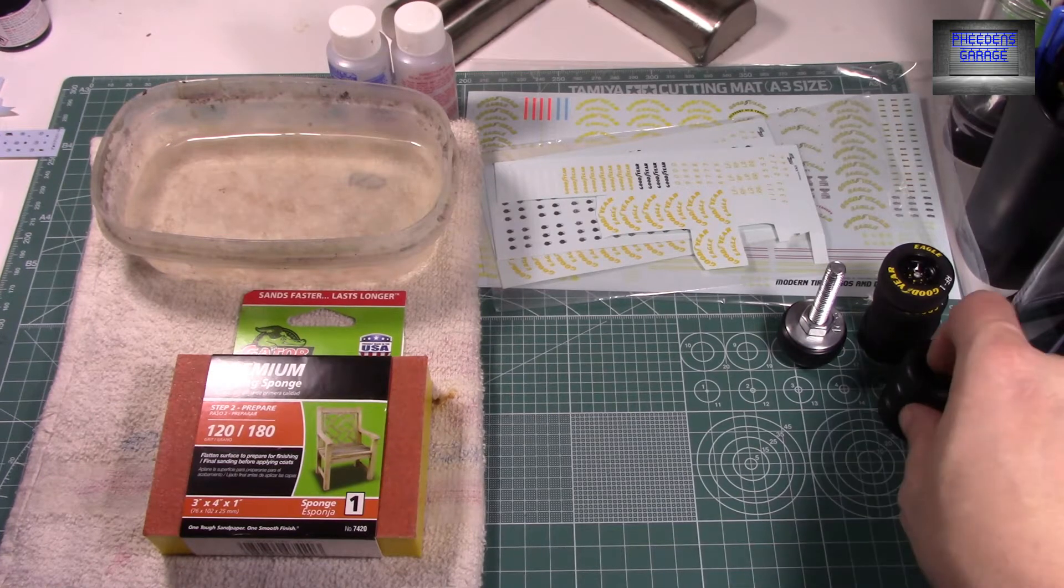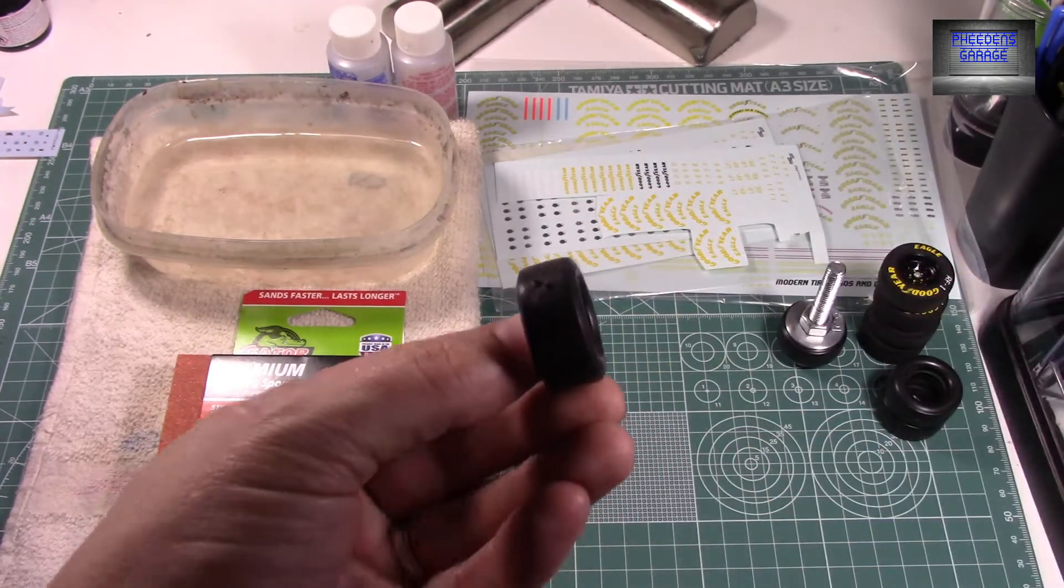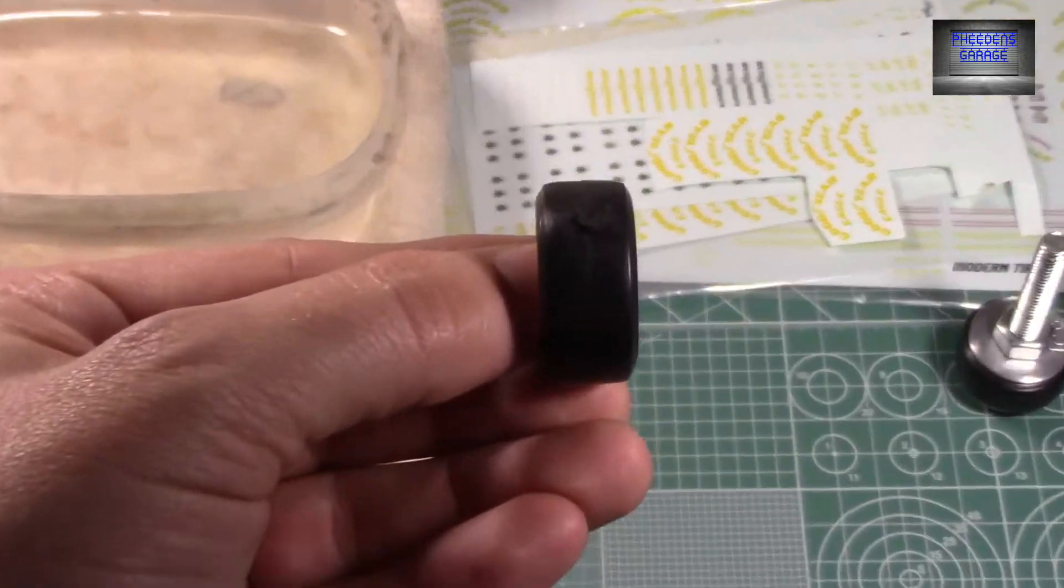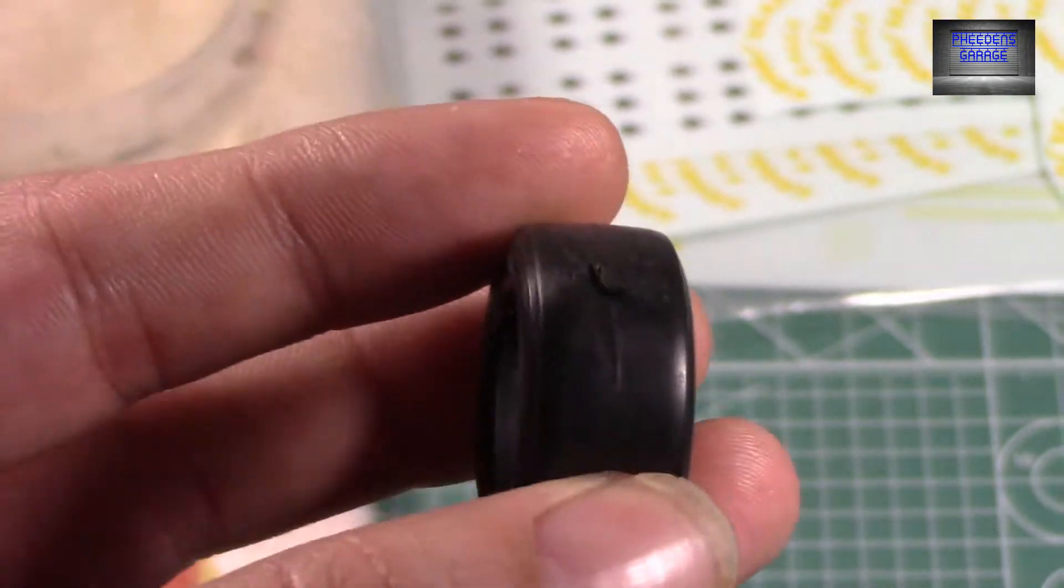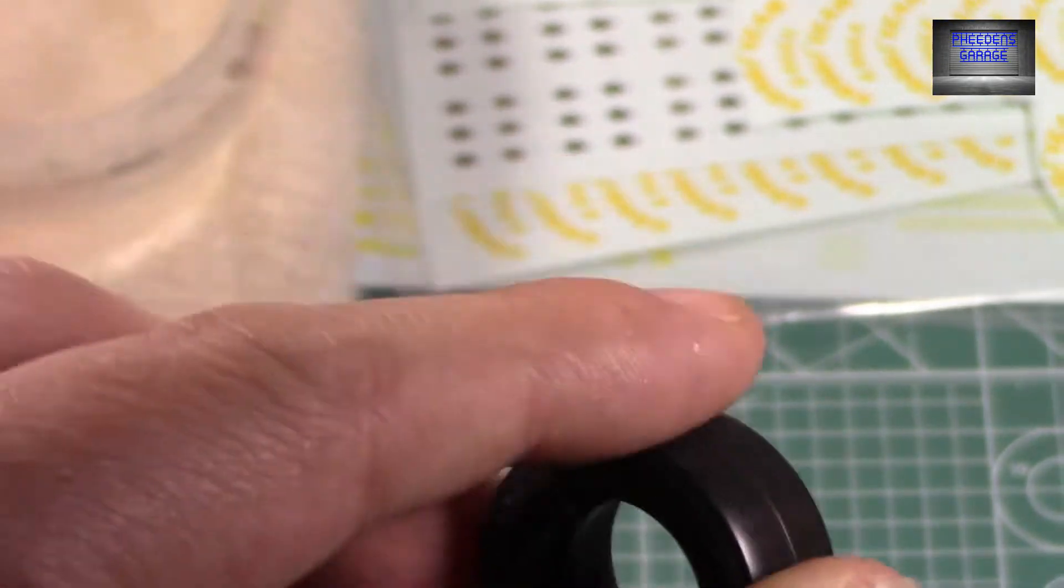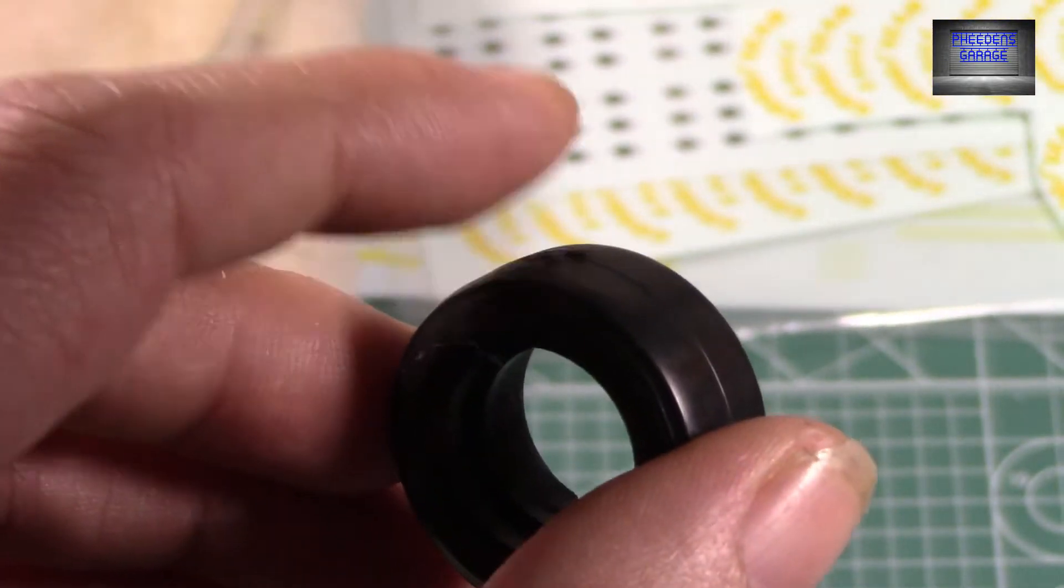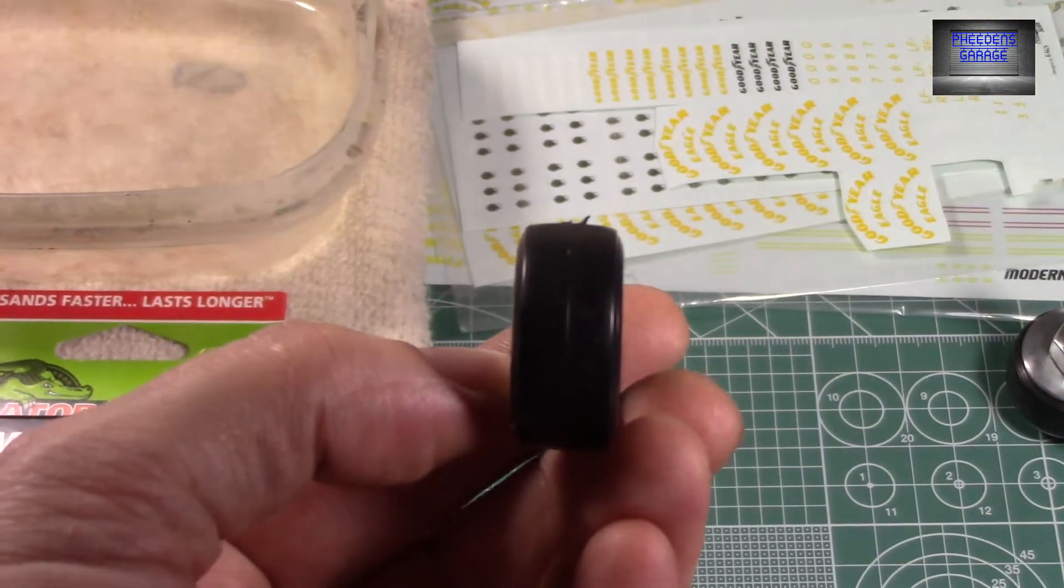So first things first, we look at the tire out of the box, and it has that nasty little mold seam, and it also has the attachment point from where it's attached to the rubber tree. So the first thing is, we want to get rid of that seam.